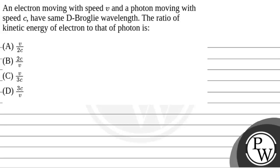Hello. Let's read the question. The question says that an electron moving with speed V and a photon moving with speed C have the same de Broglie wavelength. The ratio of kinetic energy of electron to that of photon is — so we will solve this question.